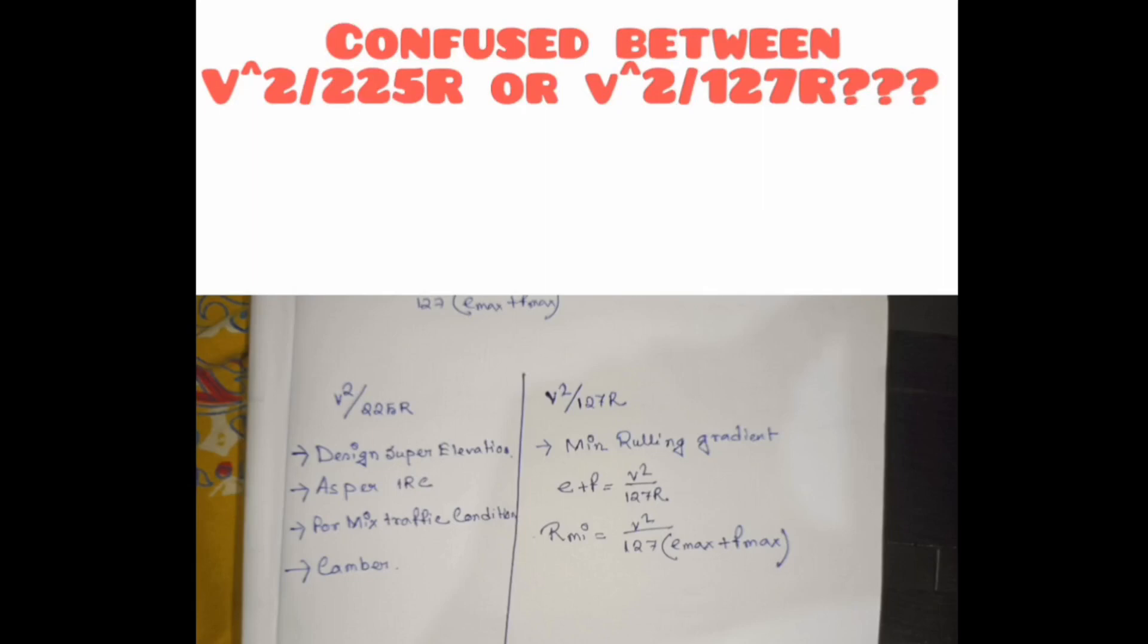I have seen students are very much confused between these two formulas: v squared by 225r or v squared by 127r when finding out super elevation. They don't know which formula to use in which numerical.